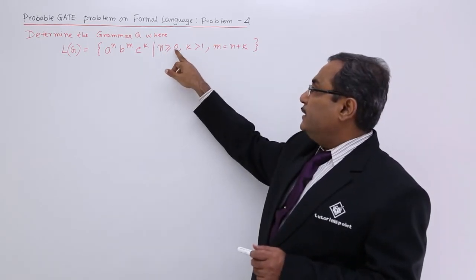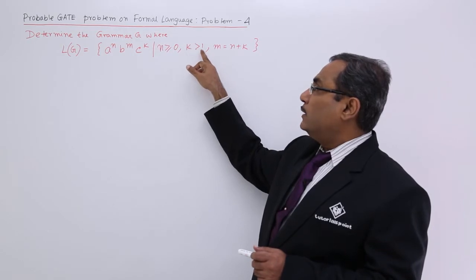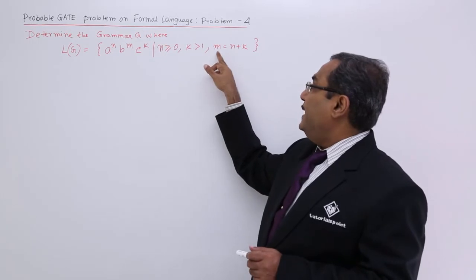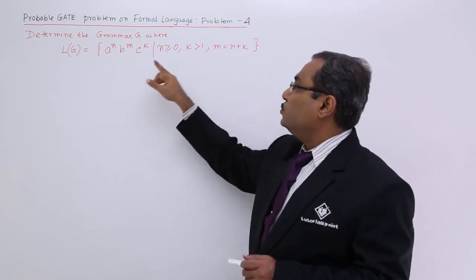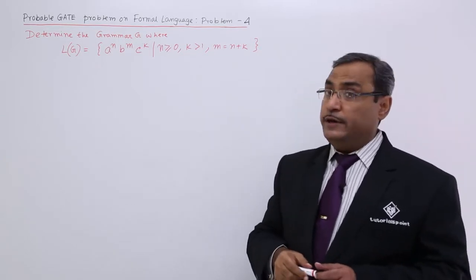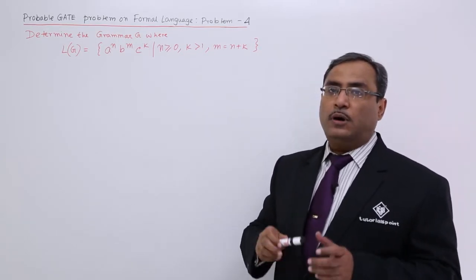So n is greater than or equal to 0, k is greater than 1. That means at least 2 times c will be there, and m will be n plus k. So m will be the sum of n plus k. It is a very interesting problem. How to approach this one?